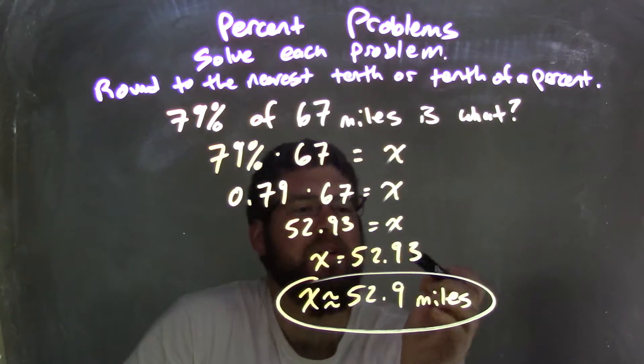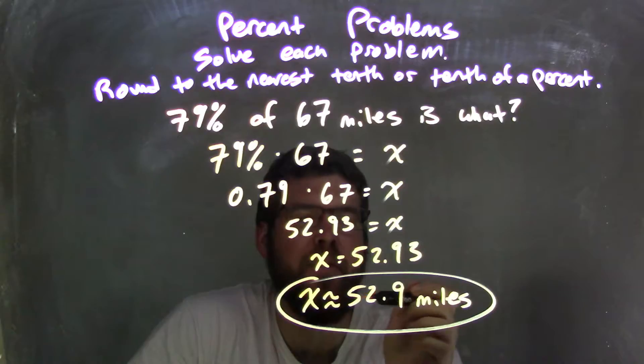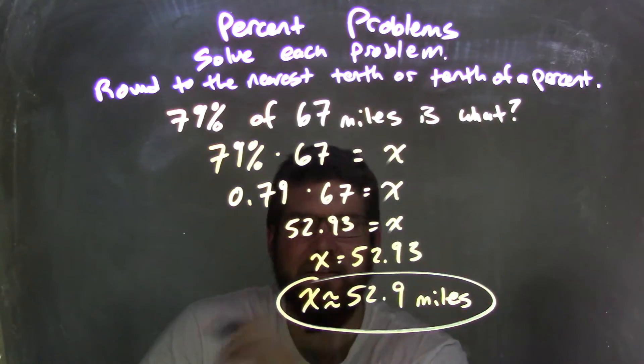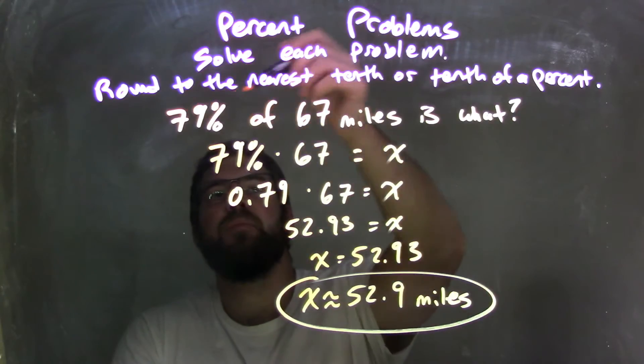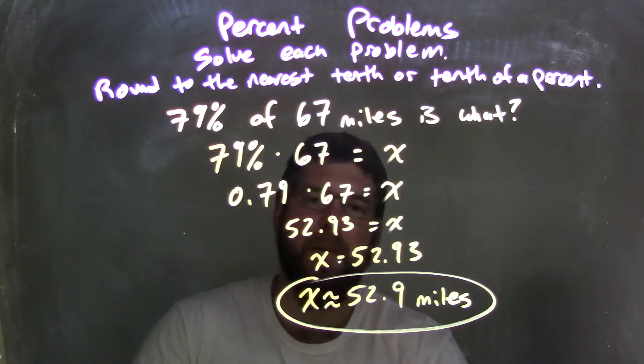Then from there, I need to round. The 3 causes the 9 to stay where it is. So I'm left with an approximate answer of x is approximately equal to 52.9, and I couldn't forget my units of miles. So the answer to the final question of 79% of 67 miles is 52.9 miles.